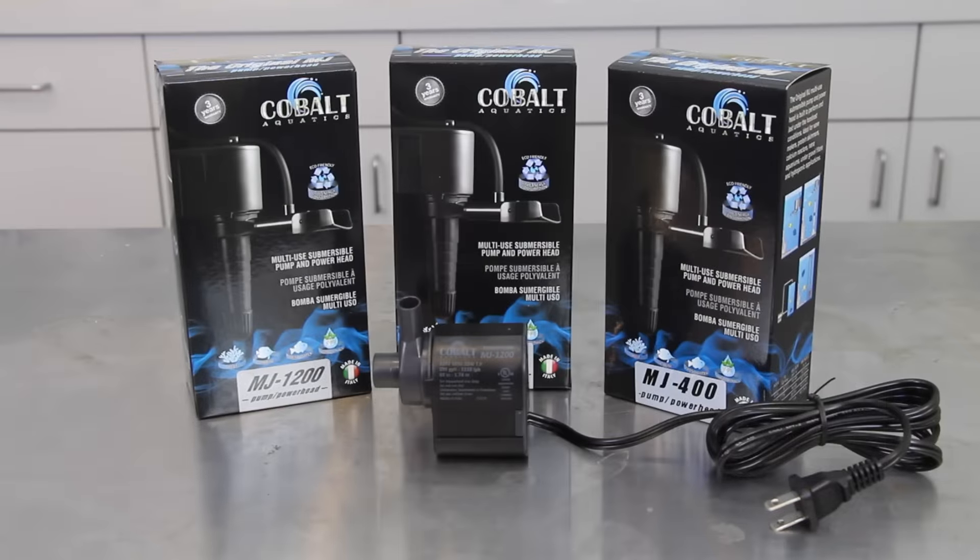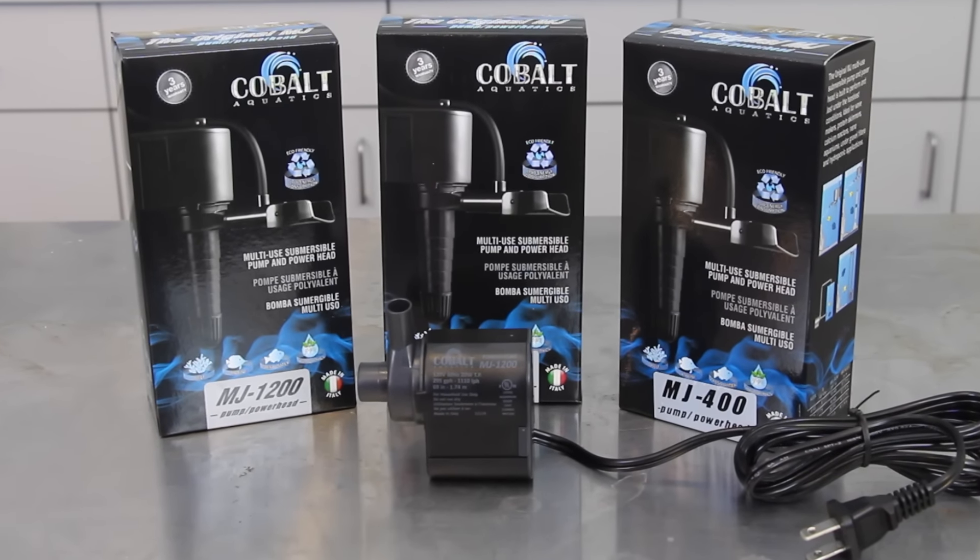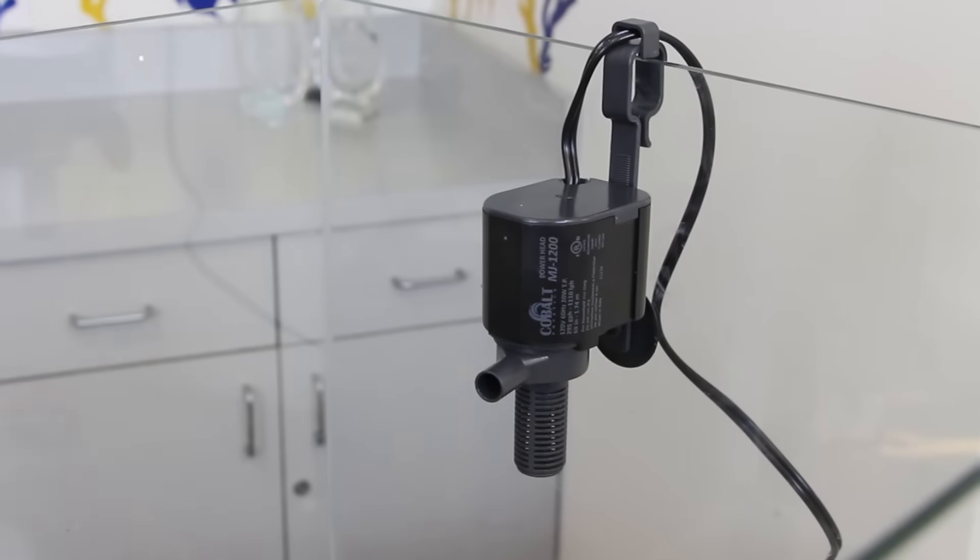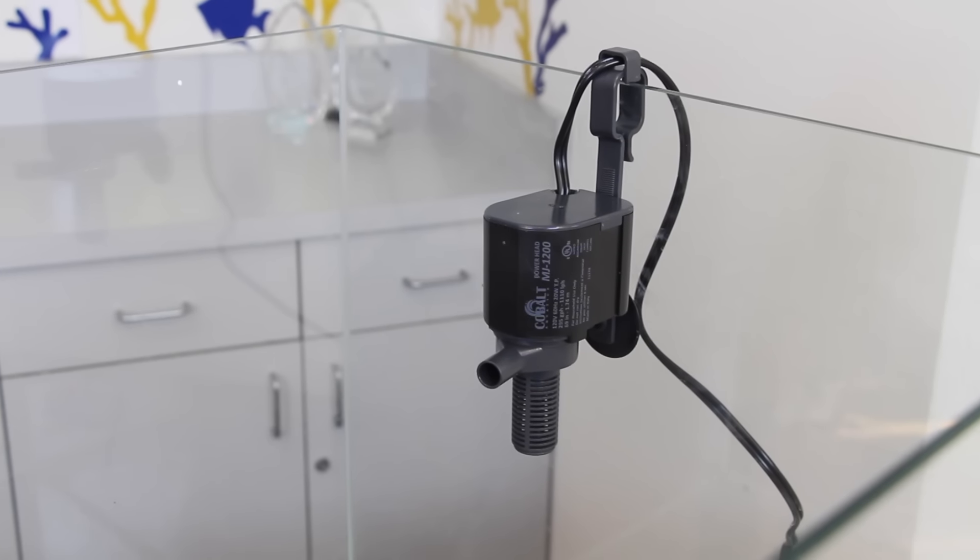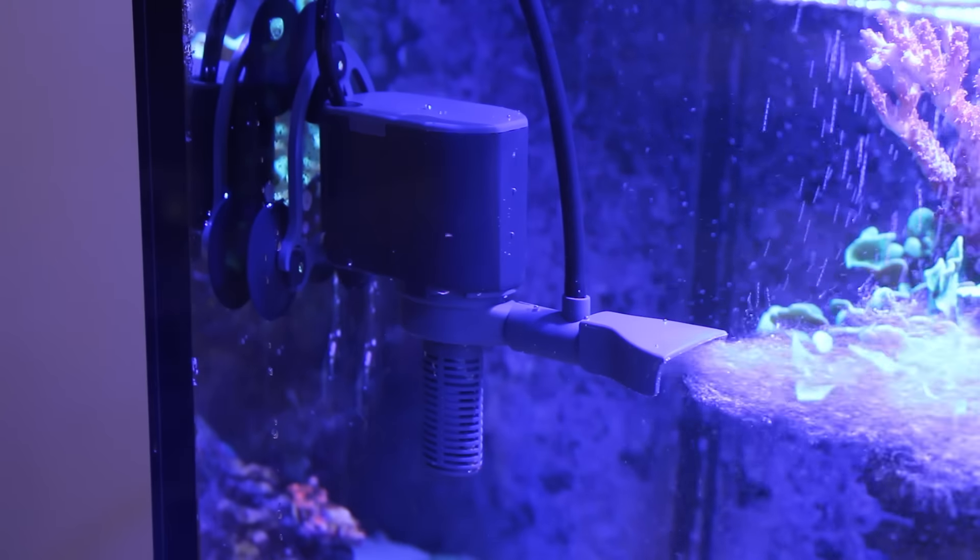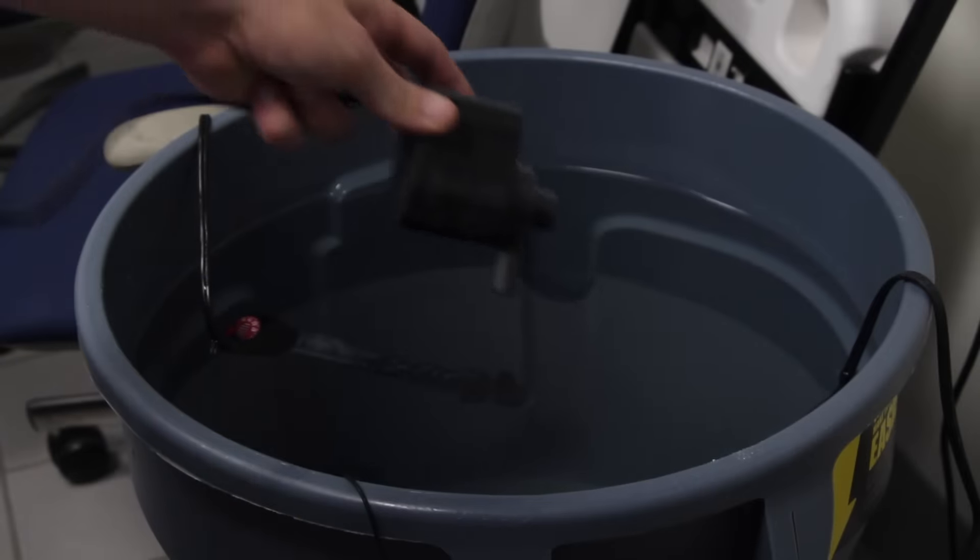I couldn't pass up the next item because it's one of the most versatile tools a hobbyist can have for their tank. The Cobalt Aquatics MJ series pumps are 15% off all month long and have all kinds of great uses when it comes to aquariums.